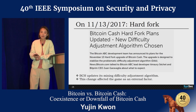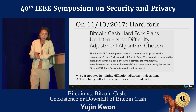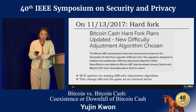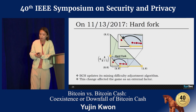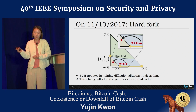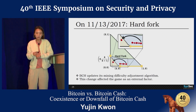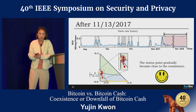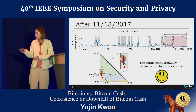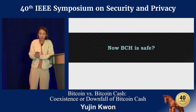However, there was a hard fork in the Bitcoin Cash system. Bitcoin Cash updated its mining difficulty adjustment algorithm. This change affected the game as an external factor. Due to this hard fork on November 13, 2017, the status jumped from zone three into zone two, where the status becomes close to co-existence. In practice, the state point gradually became close to co-existence, in agreement with our theory. Now Bitcoin Cash is safe.